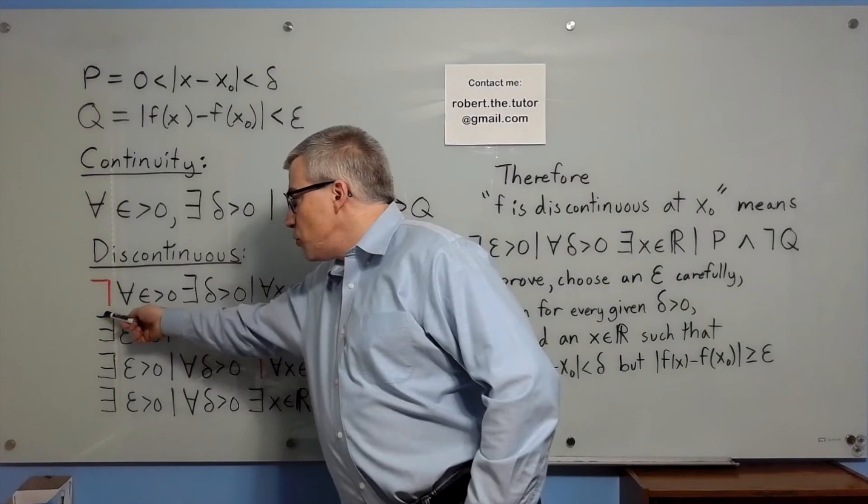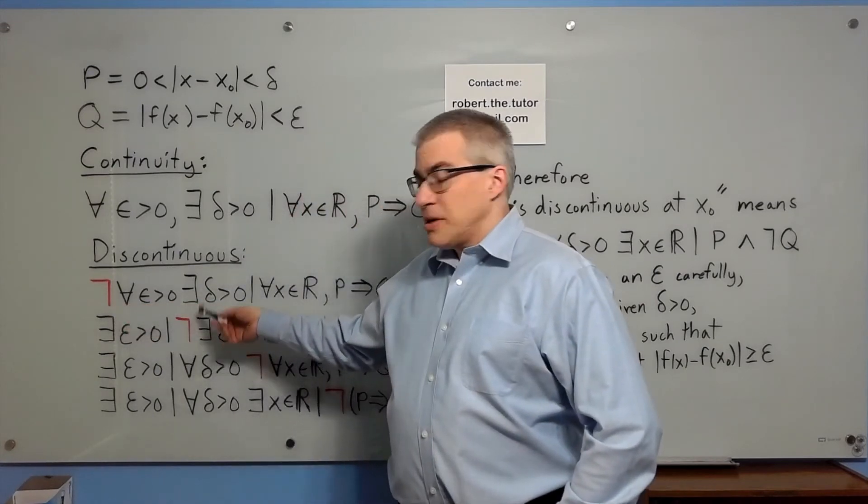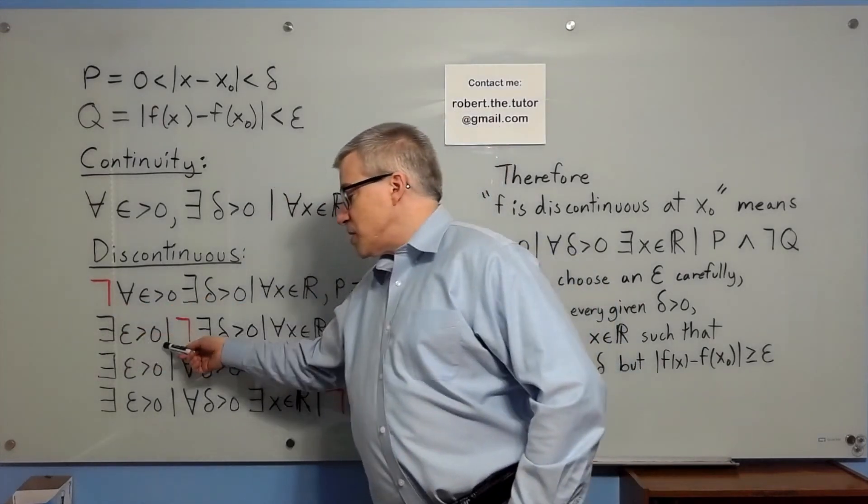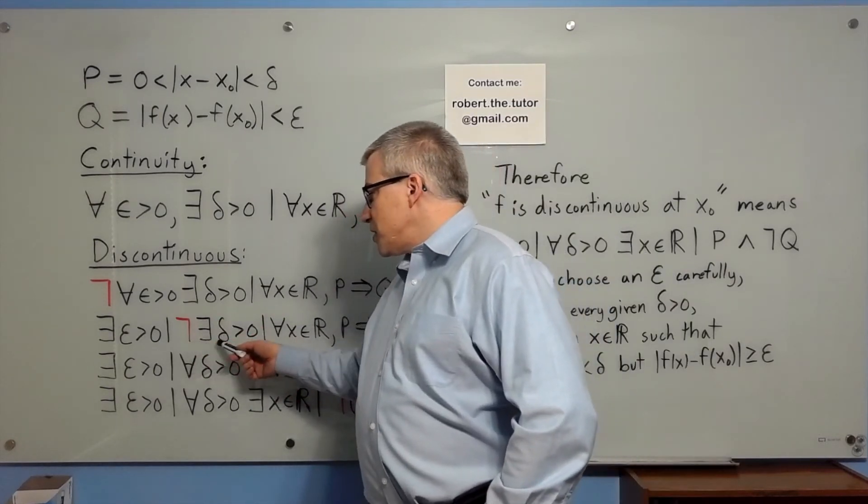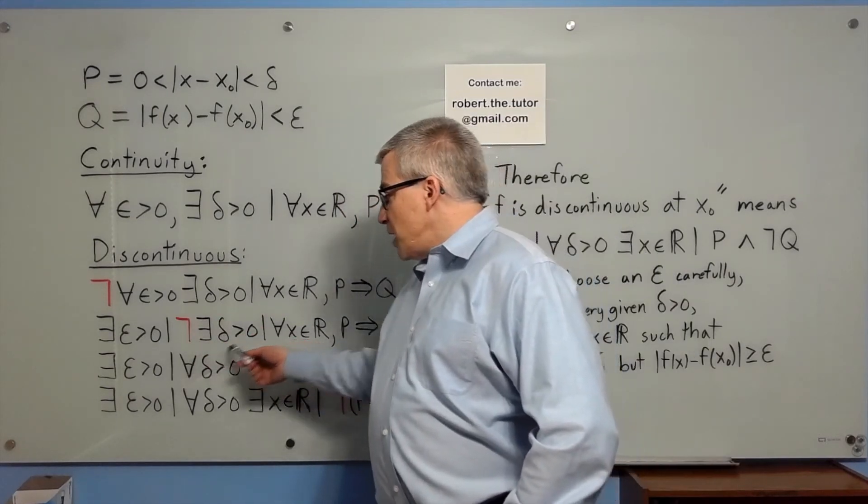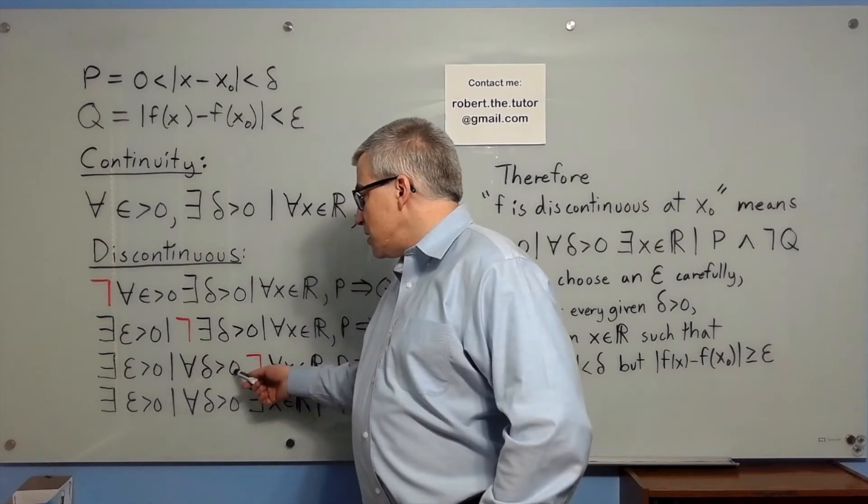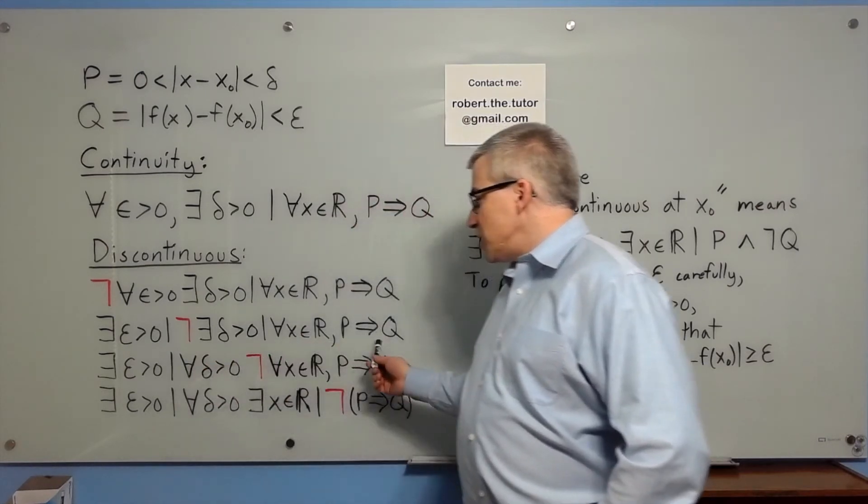If it is not true for all epsilon, that means there exists an epsilon for which it is not true. If it is not true that there exists a delta, then for all delta, it is not true that this condition is satisfied.